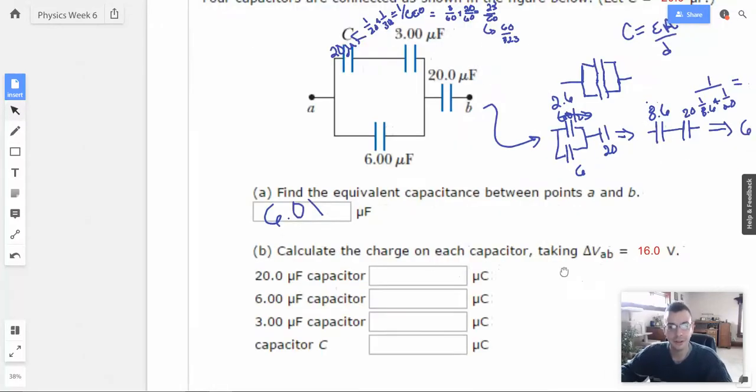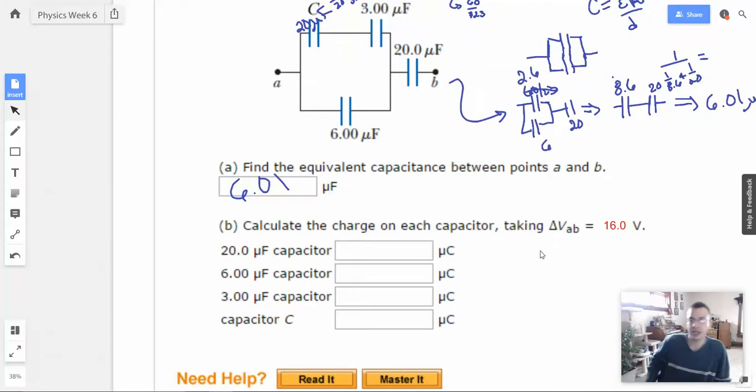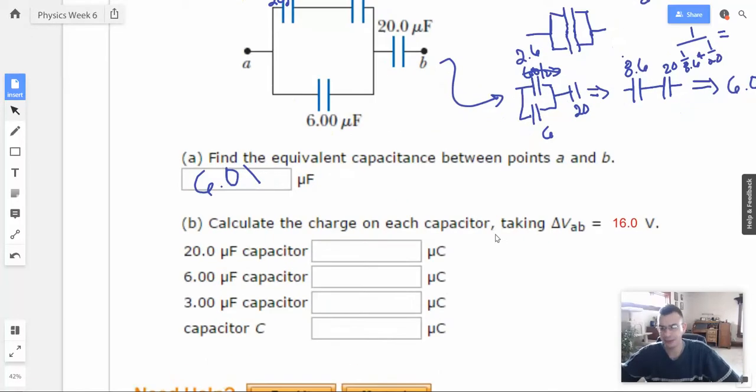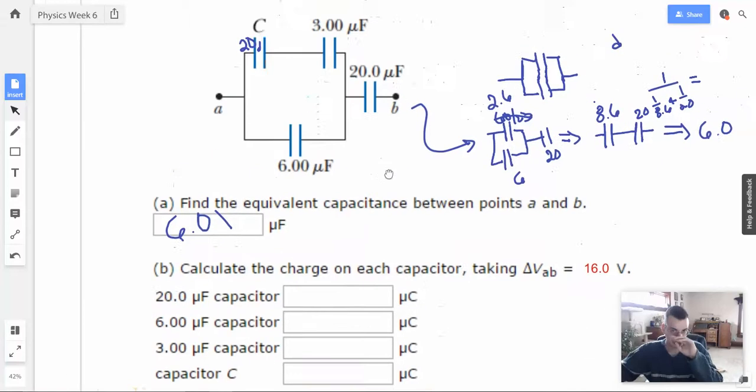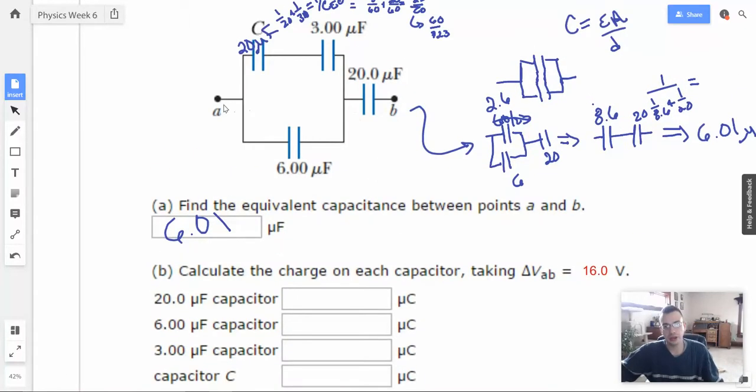Now calculate the charge on each capacitor, taking that the voltage between point A and point B is 16 volts. So I don't understand how capacitors work in life, so what I do is I try and convert everything to a resistor analogy. I'm going to pretend they're all resistors, and instead of charge, I'm going to pretend that it's current. The definition of current is dQ dt. So they're not quite the same, but they're kind of similar. We can think of this as a bunch of resistors with current flowing through them, but instead these are actually charges on capacitors.